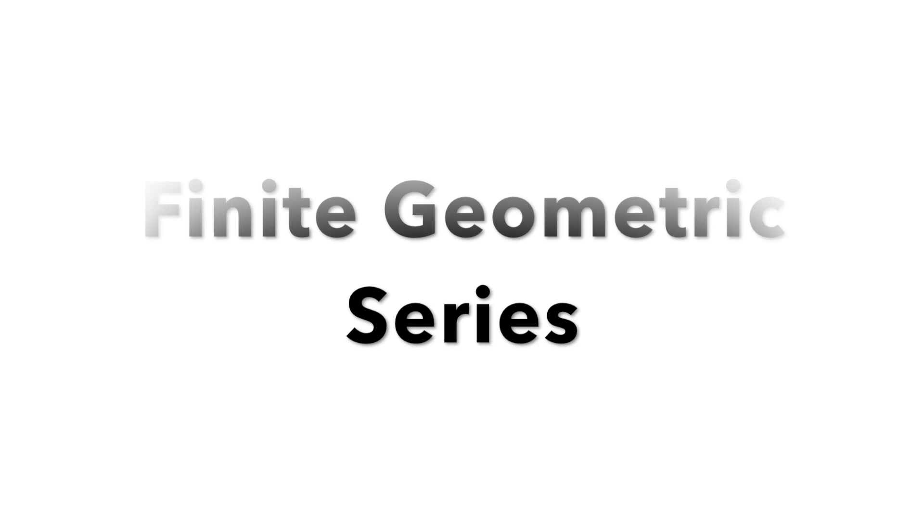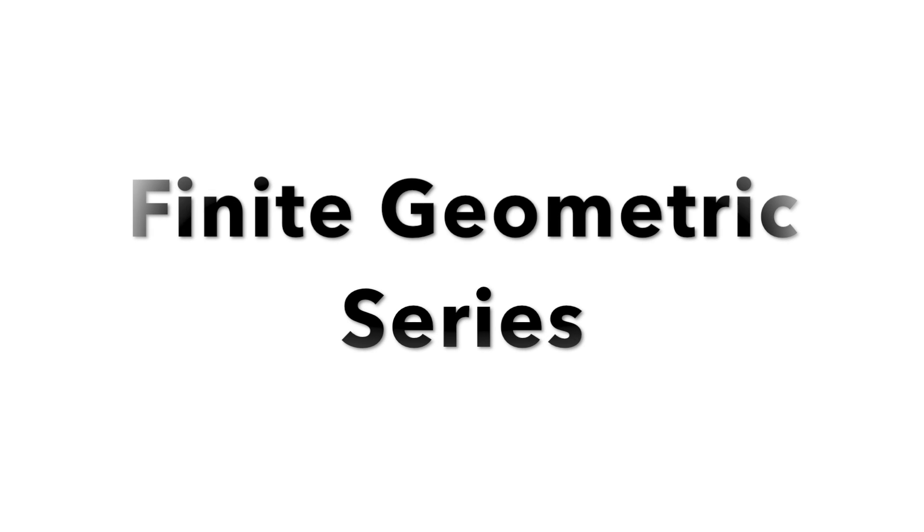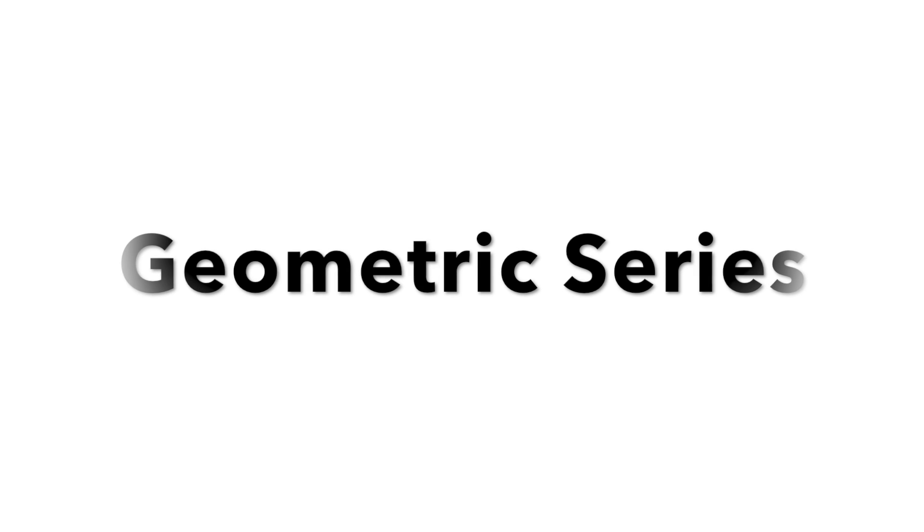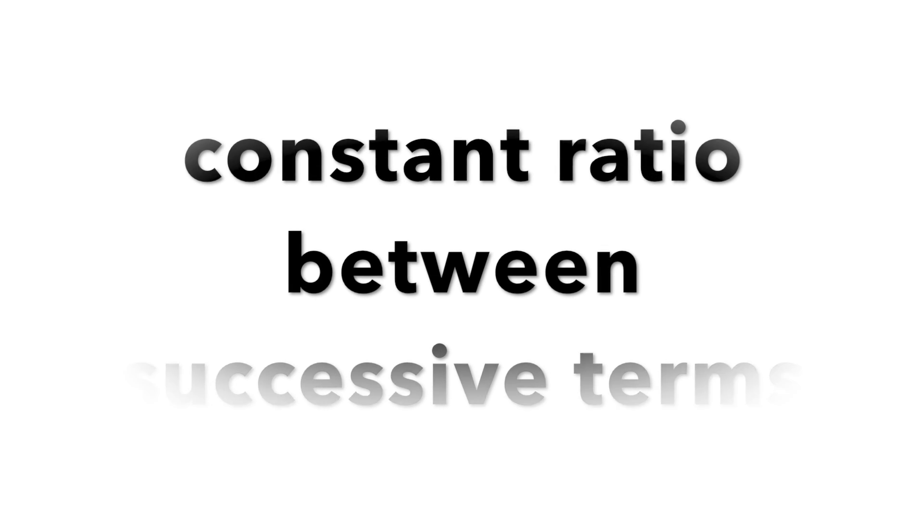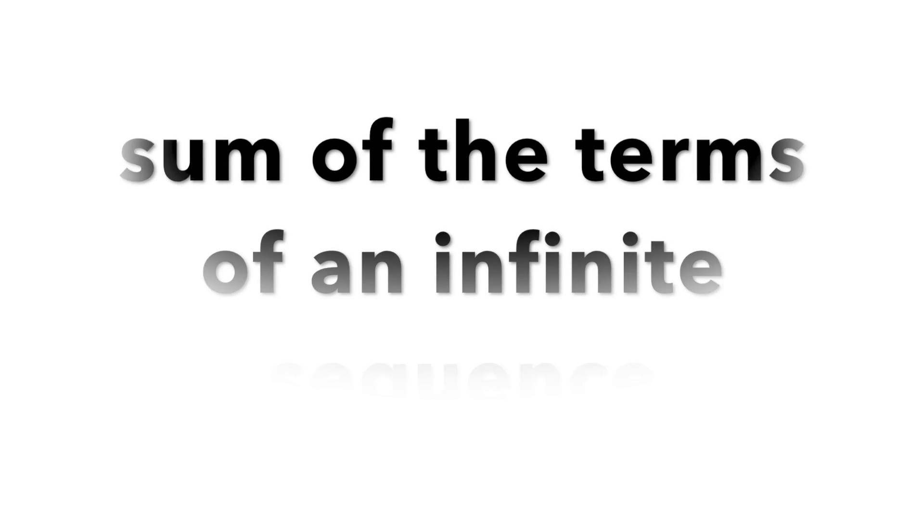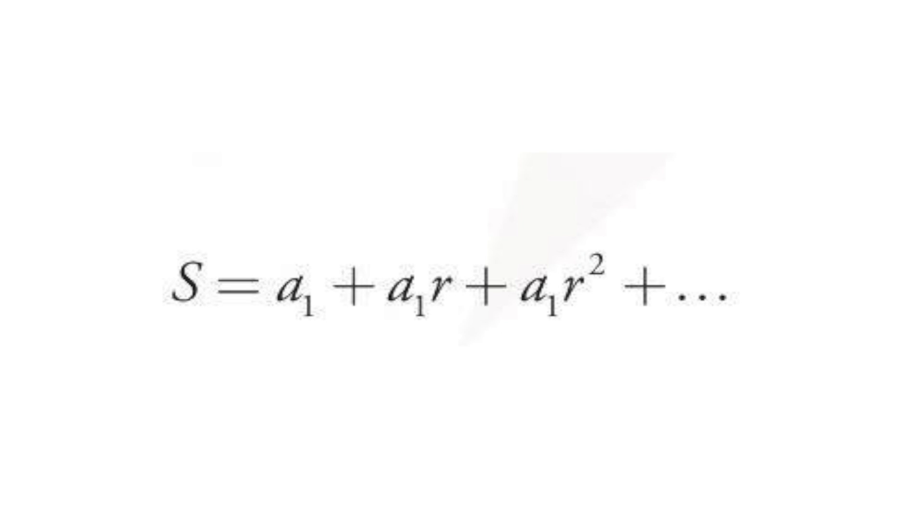Before we tackle the given problem, it would be best to recall what we know about the geometric series, particularly finite. Soon, you will realize its importance to our task. Basically, a geometric series is a series with a constant ratio between successive terms. A series is the sum of the terms of an infinite sequence. Thus, a geometric series is in the form of a sub 1, plus a sub 1 r, plus a sub 1 r squared, plus a sub 1 r cubed, and so on, with r not being equal to 1.